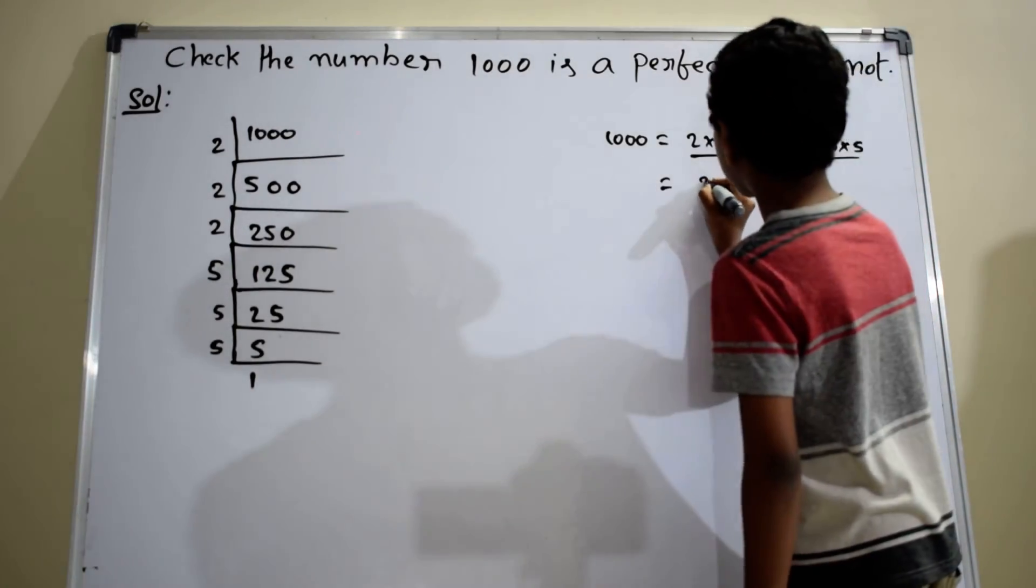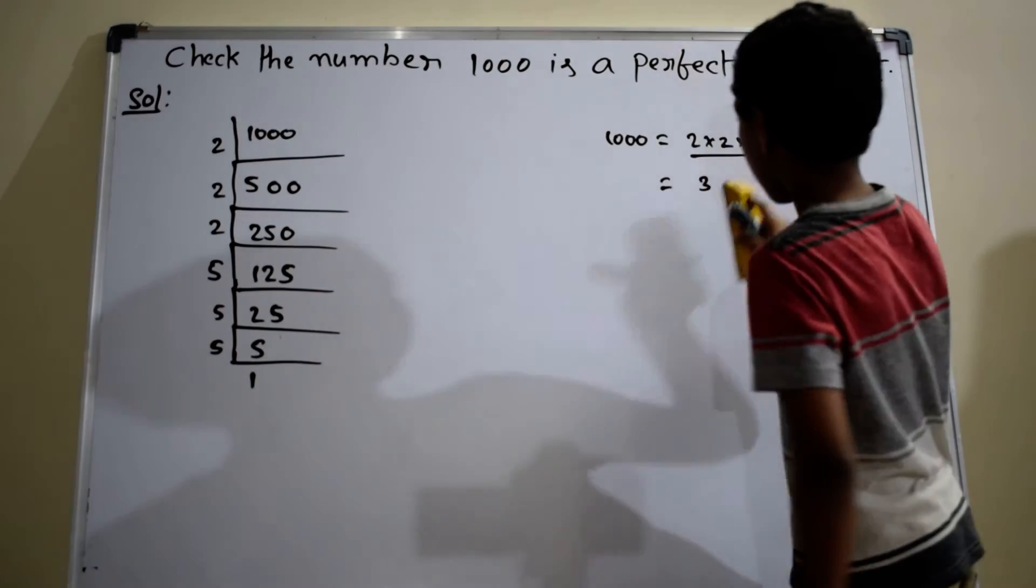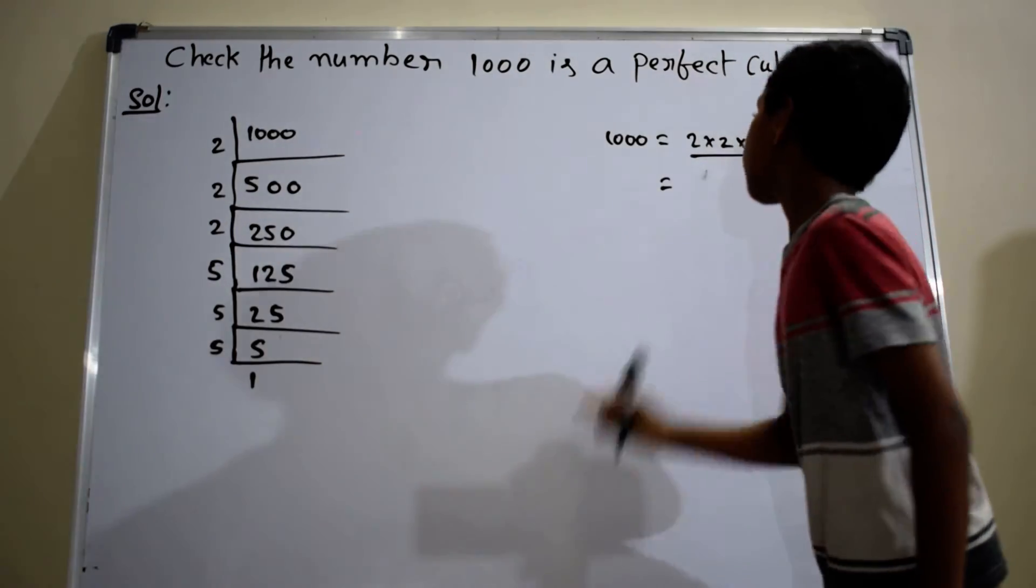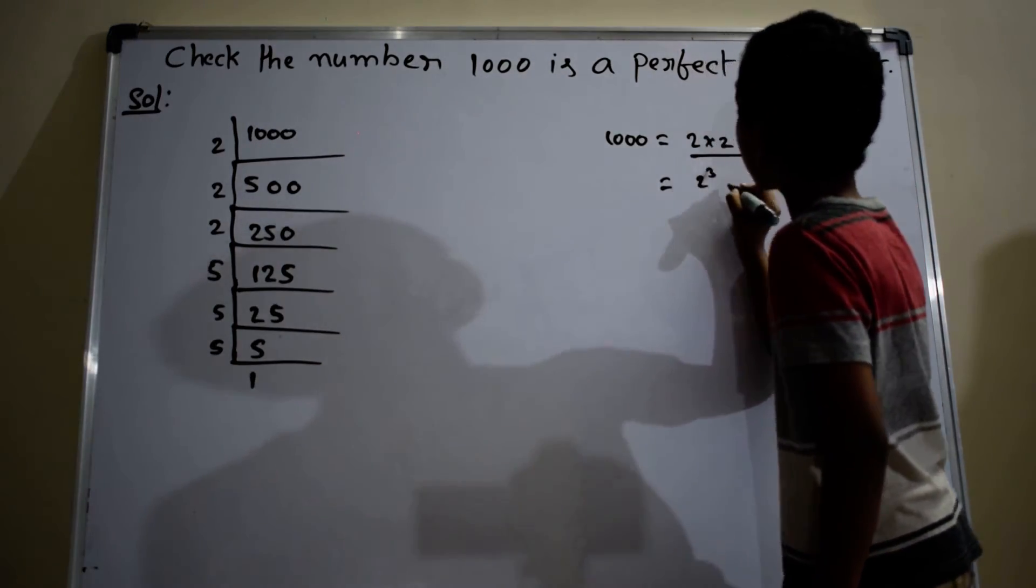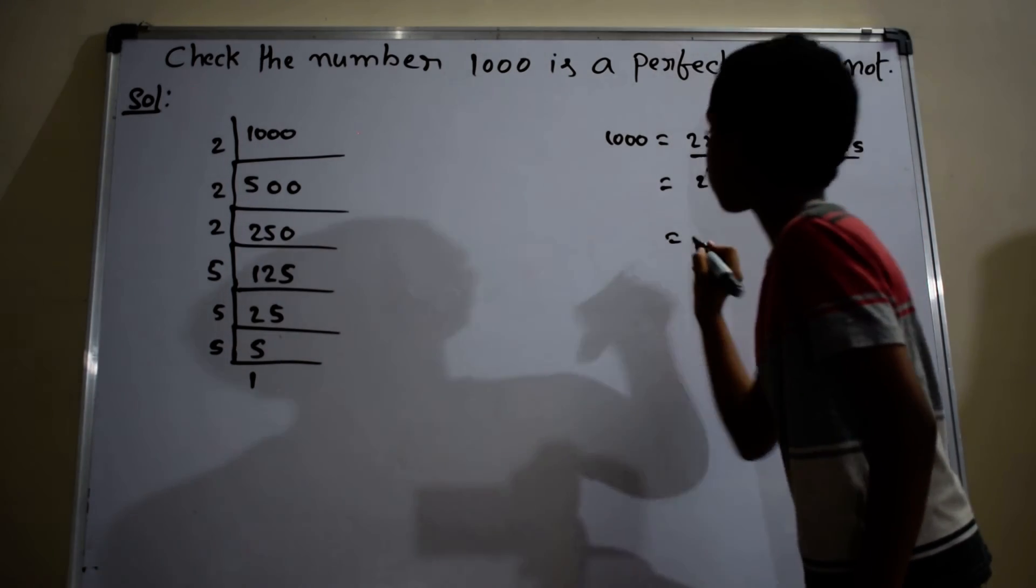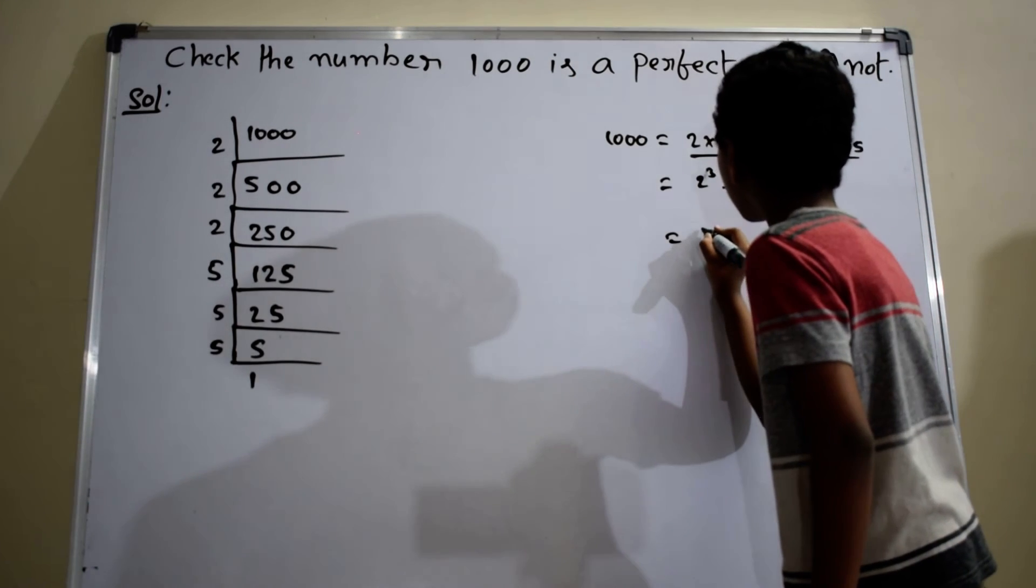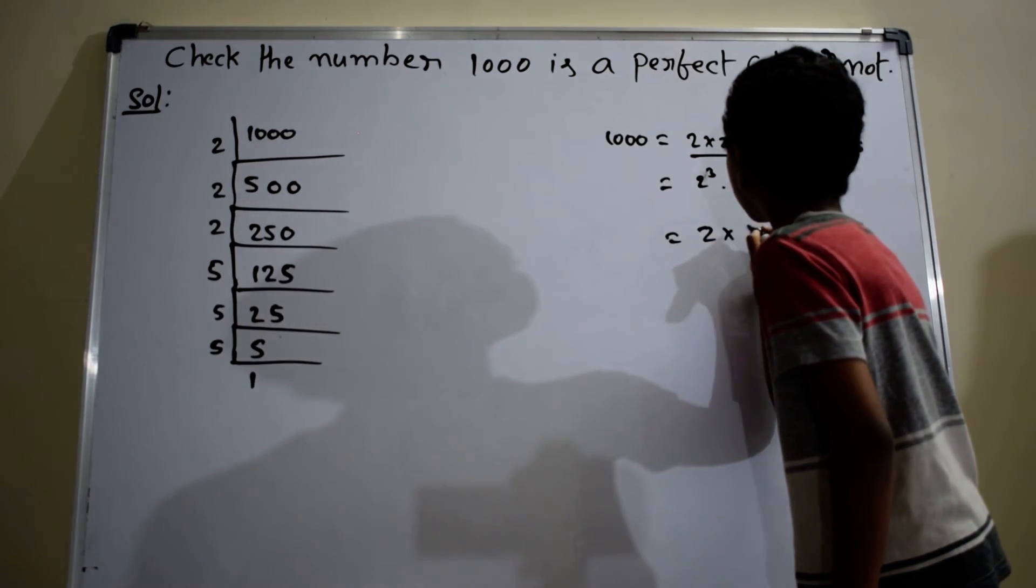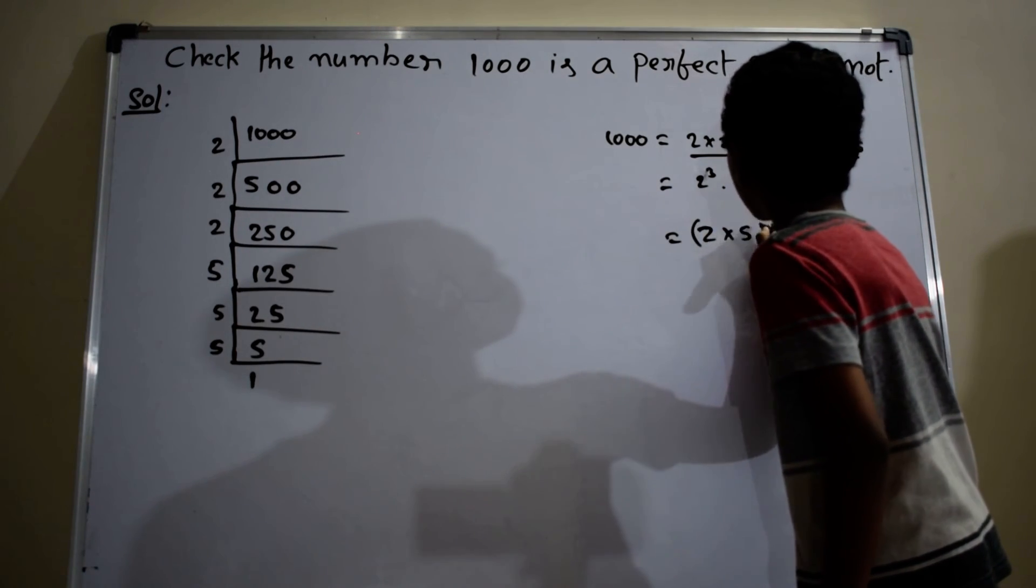Which is equal to 2 cube into 5 cube, equals 2 into 5 whole cube.